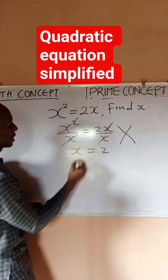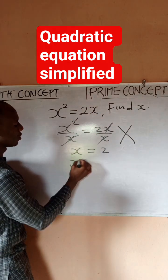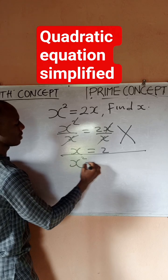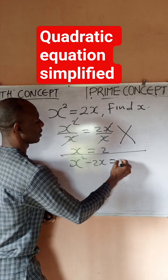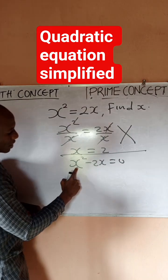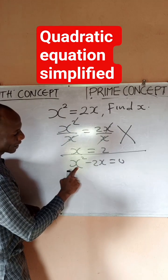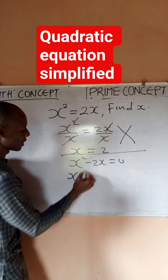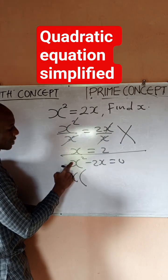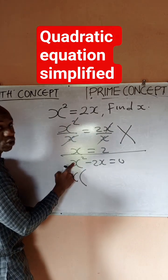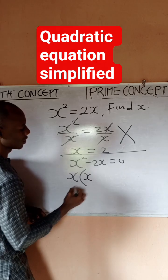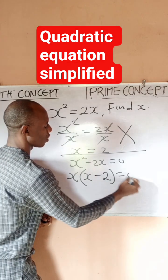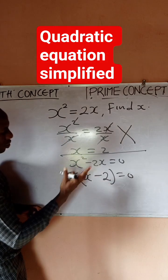What you do is move the 2x to this side, so you would have x squared minus 2x equals zero. Now, x is common in both terms, so I factorize — I bring out x, and I'm left with x minus 2, giving x(x minus 2) equals zero.